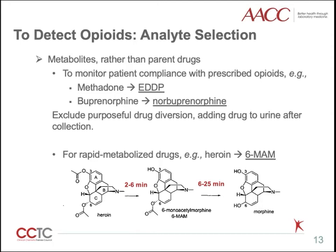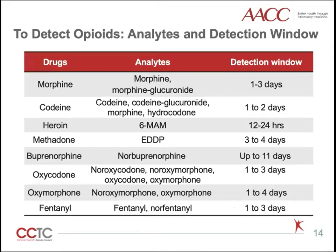Another special condition is drugs with rapid metabolism. For example, heroin is metabolized to 6-MAM with a half-life of only 2 to 6 minutes, which makes it less likely to detect parent heroin in urine. 6-MAM and morphine are sequential metabolites of heroin. However, morphine is not unique for heroin use, as we mentioned before. Therefore, 6-MAM is a unique biomarker indicating heroin use. Here is a list of analytes and detection windows for opiates. Opiate use can be detected by the presence of parent drug or metabolites in urine within 1 to 4 days. For heroin use, the detection window of 6-MAM is only 12 to 24 hours.